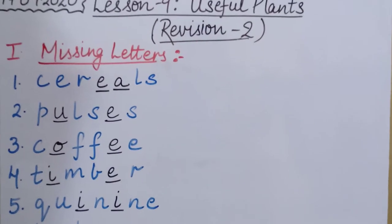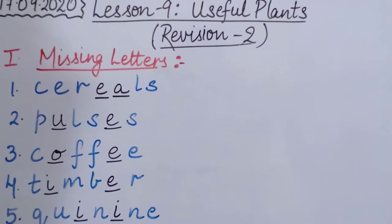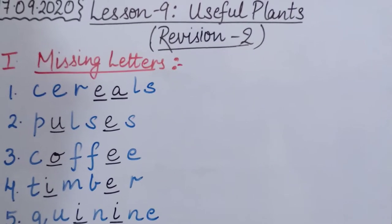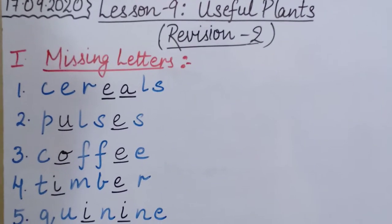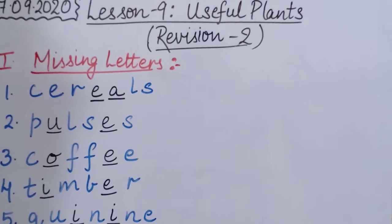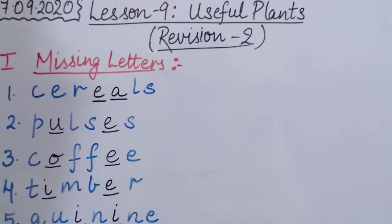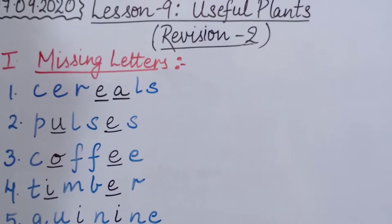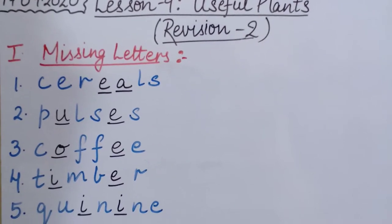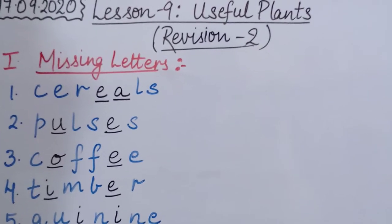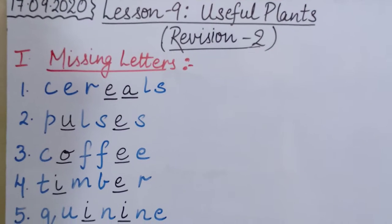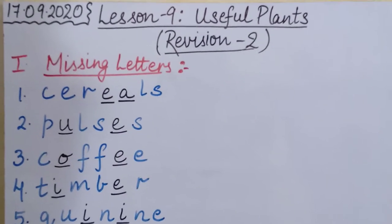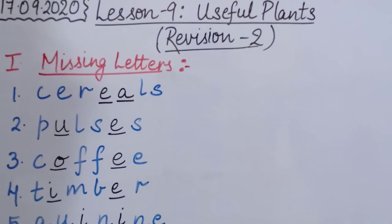Hello children, how are you all? I hope you all are good and doing well at home. So children, as you all know that this is our online EVS class and today we are going to do revision 2 of lesson 9, that is useful plants. Yesterday we completed revision 1 and I hope you all have completed your revision 1 of lesson 9 in your revision notebooks. Now coming back to our revision 2 of lesson 9.